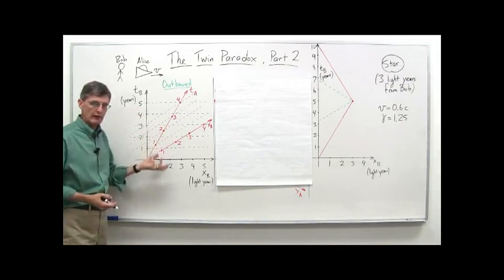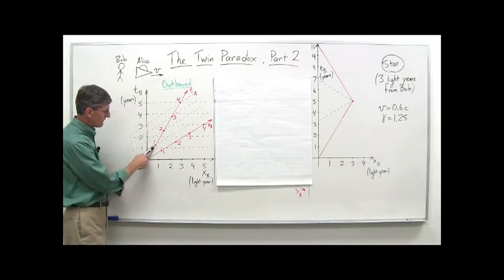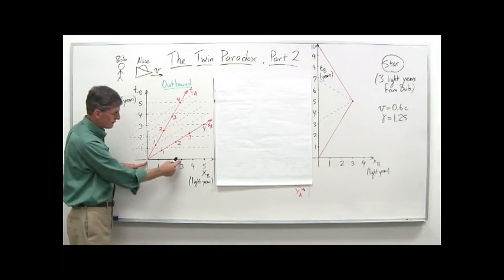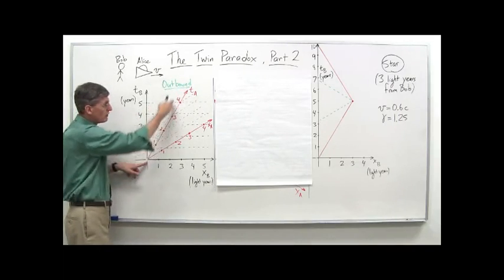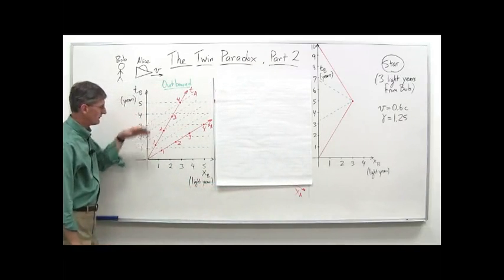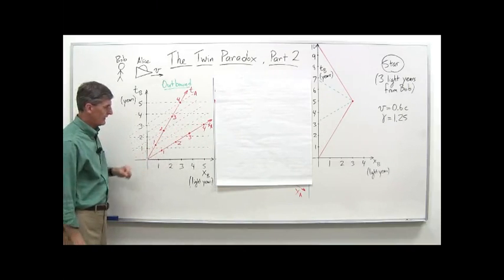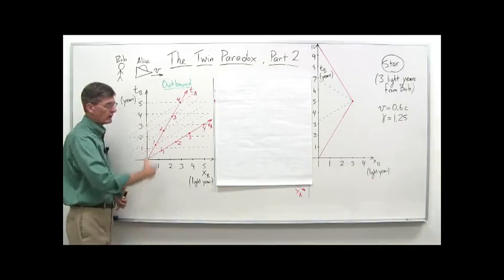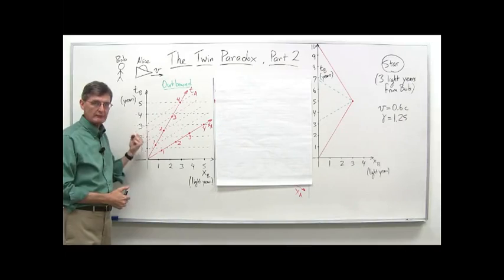Just to reiterate: the outbound trip is similar to things we've done before. Alice is traveling along, and in Bob's frame of reference she's traveling along the x-axis. She gets to three light years out — that's where the star is — and at that point she's going to start her return trip. Her world line traveling through Bob's frame of reference going out to the star includes the lines of simultaneity and scale markings for Alice's clock and her axis. So that's the outbound trip: when Alice reaches the star, Bob's clock reads five, Alice's clock reads four.